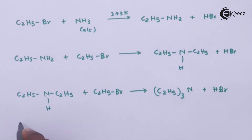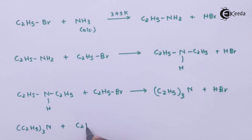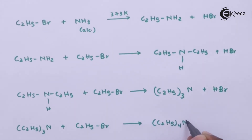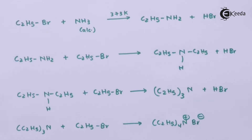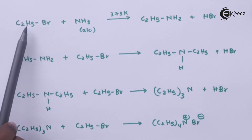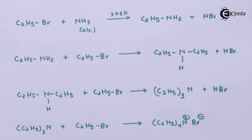This is the tertiary amine we got. And if this triethylamine, (C2H5)3N, reacts with another molecule of C2H5Br, we could get a quaternary ammonium salt, (C2H5)4N+ Br−. Additionally, we have considered a primary alkyl halide here, and this reaction can also be done for a secondary halide. But for a tertiary alkyl halide — for example, tertiary butyl bromide — it is not reactive to ammonia, and ammonolysis does not take place in that case.